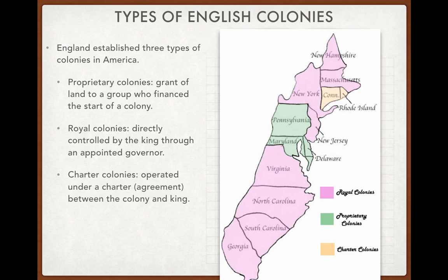Royal colonies were started by England to expand English power and bring wealth back to the home country. Each one established had an English-style government with a bicameral legislature and a governor appointed by the king. Virginia is an example — the Virginia colony was started by the king of England to expand English power. The vast majority of the colonies were royal colonies started by England itself.